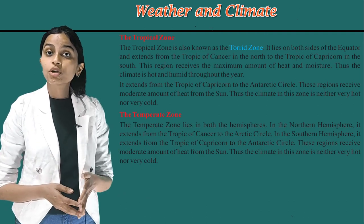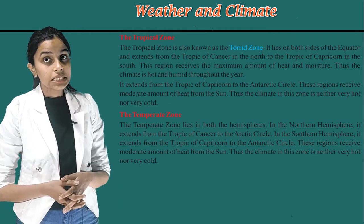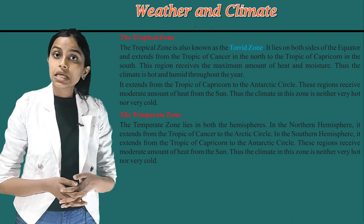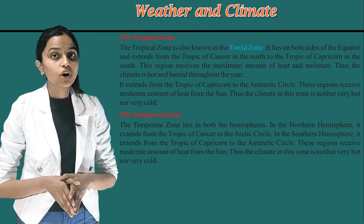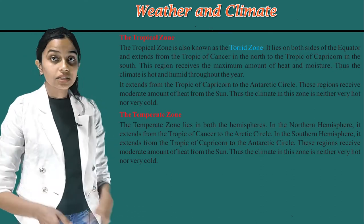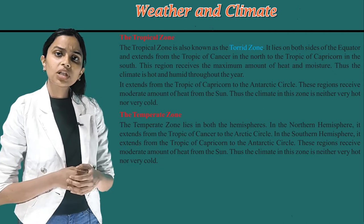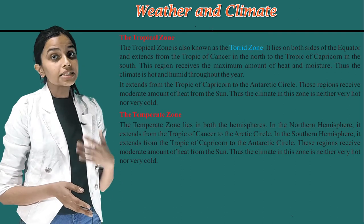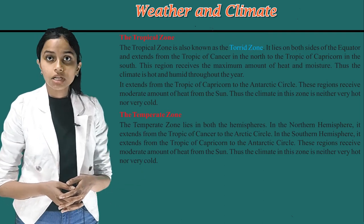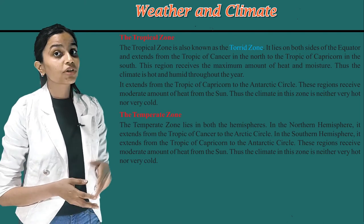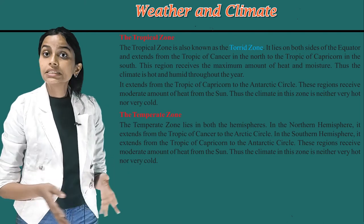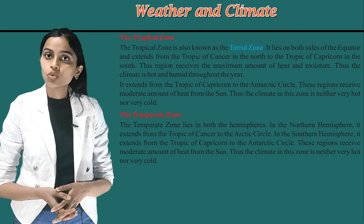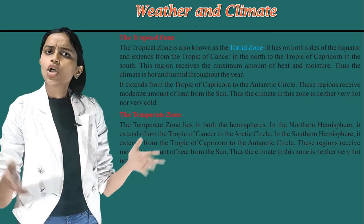The second heat zone is the temperate zone. The temperate zone lies in both hemispheres. In the northern hemisphere, it extends from the Tropic of Cancer to the Arctic Circle. In the southern hemisphere, it extends from the Tropic of Capricorn to the Antarctic Circle. These regions receive a moderate amount of heat from the sun. Thus, the climate in this zone is neither very hot nor very cold.